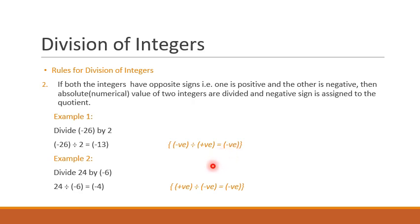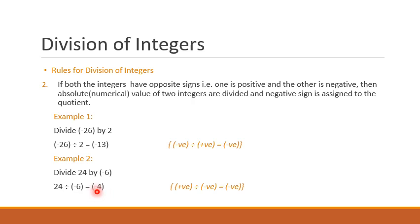Now let's see one more example. Divide 24 by minus 6. So 24 is a positive integer and minus 6 is a negative integer. Divide the absolute value: 24 divided by 6 gives me 4. And since the signs are opposite, we put negative sign in the quotient. So if the signs are opposite, the answer will always be negative. Positive divided by negative gives me negative.